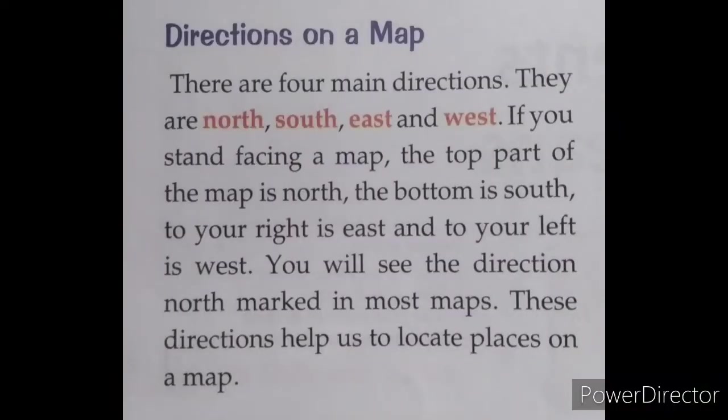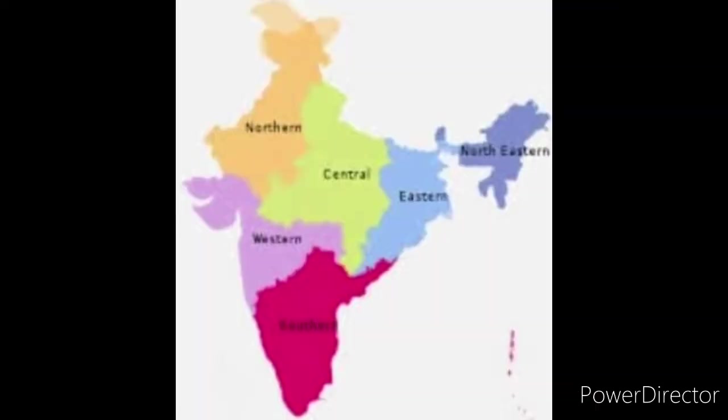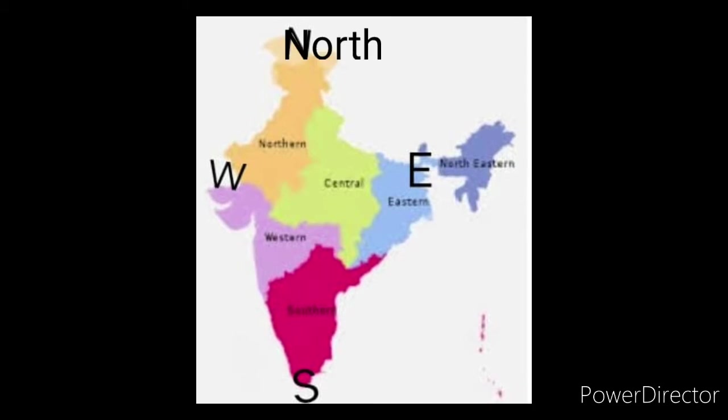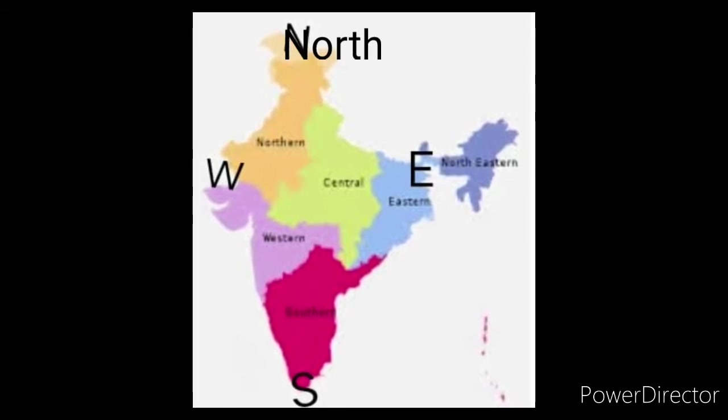Directions on a map. There are four main directions: north, south, east, and west. If you stand facing a map, the top of the map is north, the bottom is south, to your right is east, and to your left is west. So when you stand in front of a map, what you see at the top is the north side.